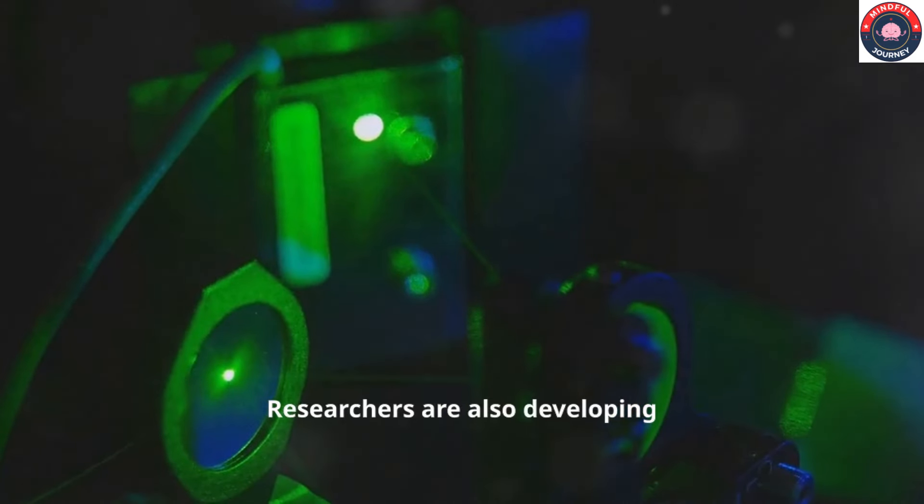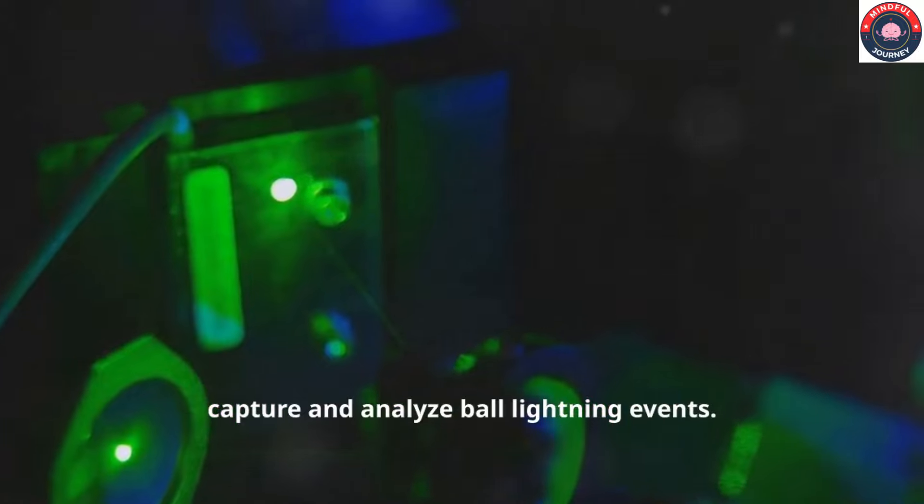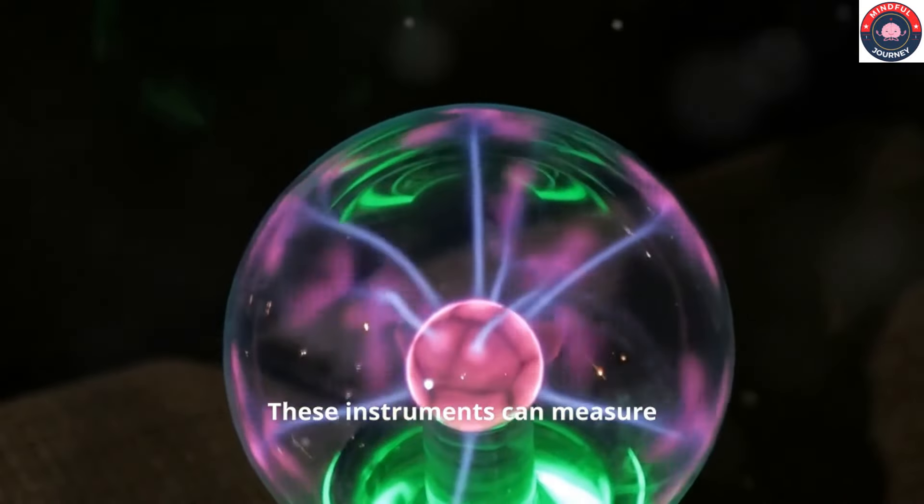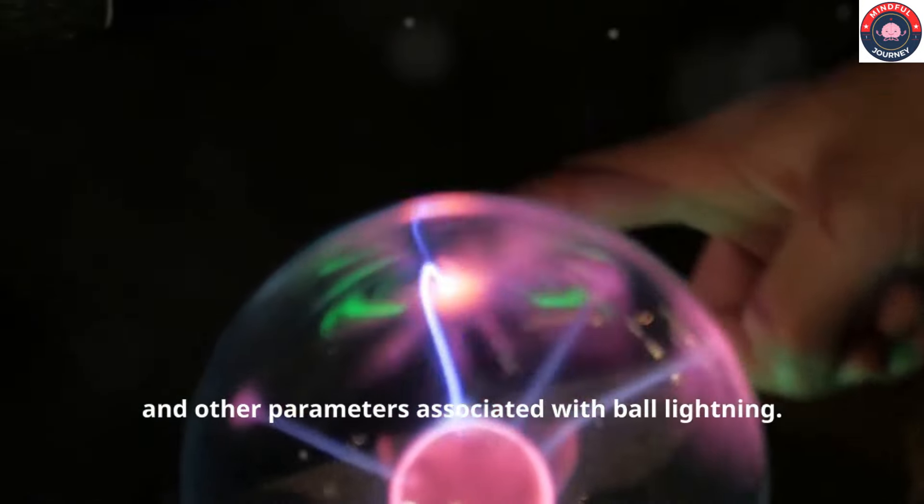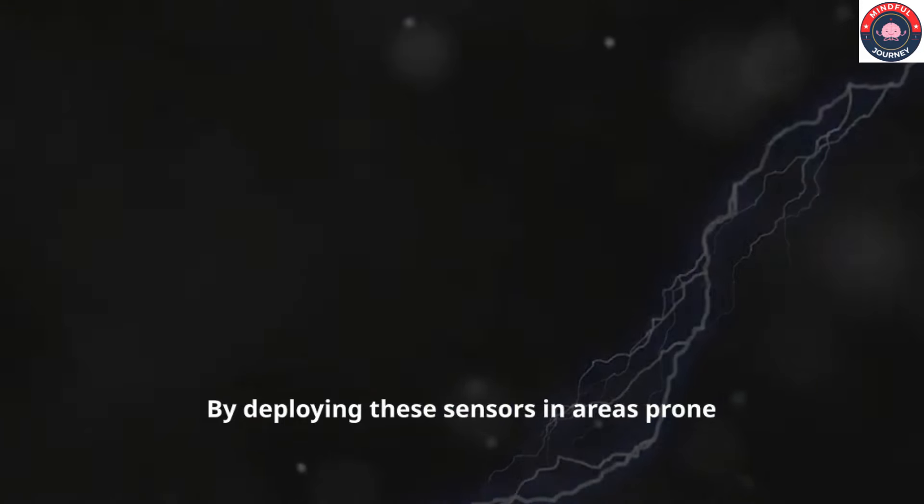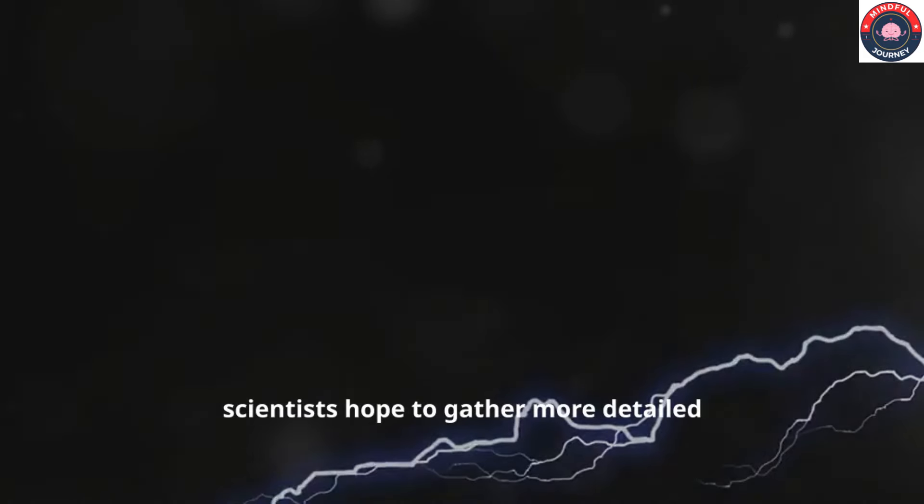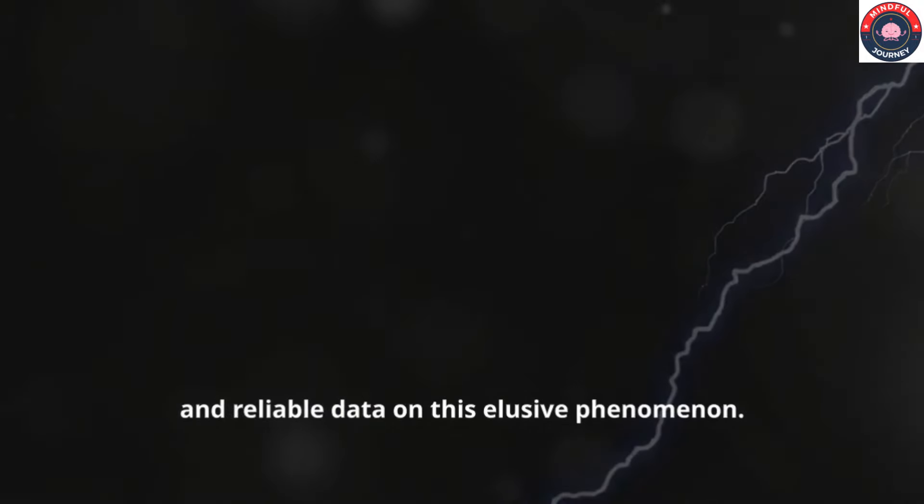Researchers are also developing sophisticated sensors and detectors to capture and analyze ball lightning events. These instruments can measure electromagnetic fields, temperature and other parameters associated with ball lightning. By deploying these sensors in areas prone to thunderstorms, scientists hope to gather more detailed and reliable data on this elusive phenomenon.